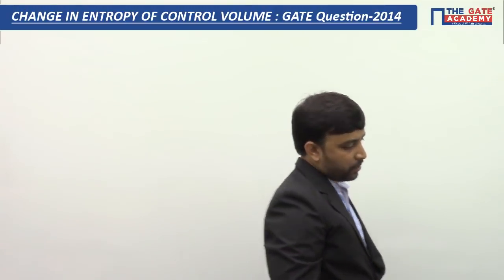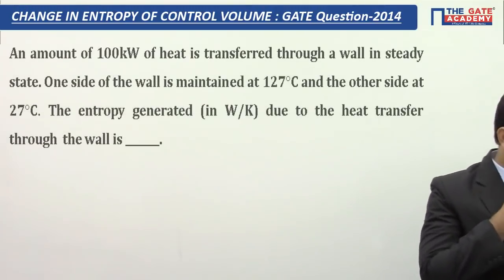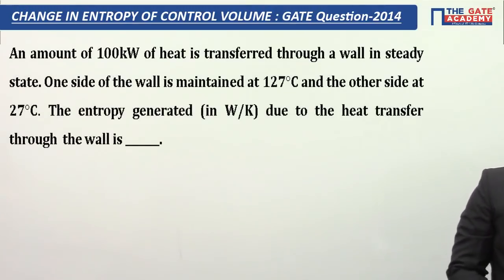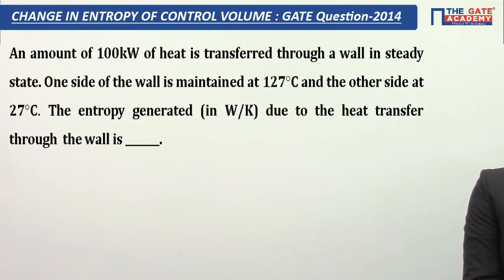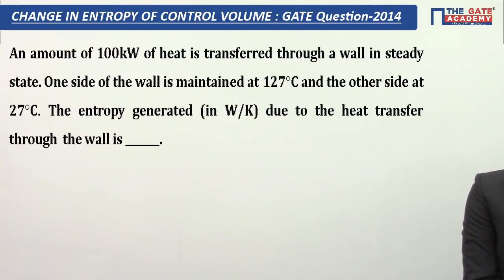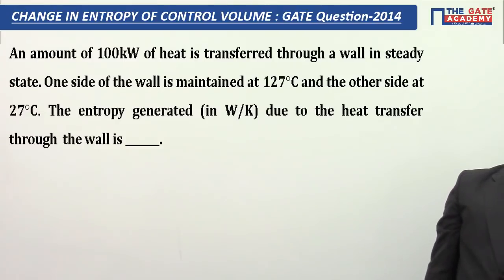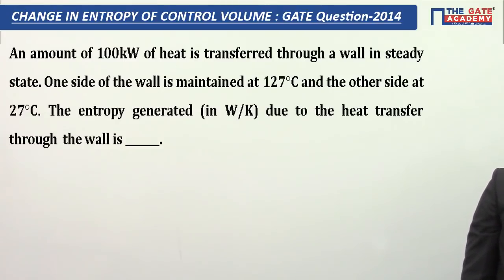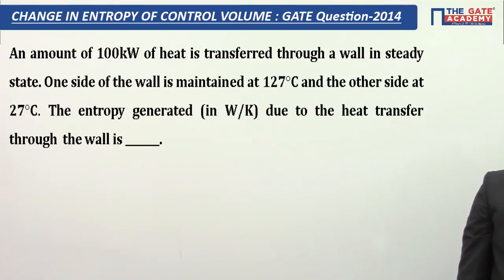The question is like this: an amount of 100 kW of heat is transferred through a wall in steady state. One side of the wall is maintained at 127 degrees C and the other side at 27 degrees C. The entropy generated in watt per Kelvin due to heat transfer through the wall is to be found.